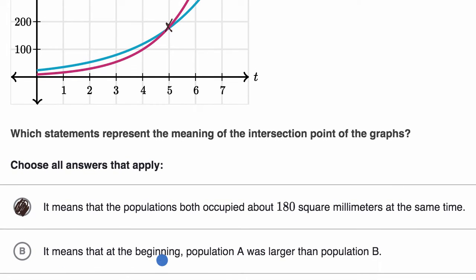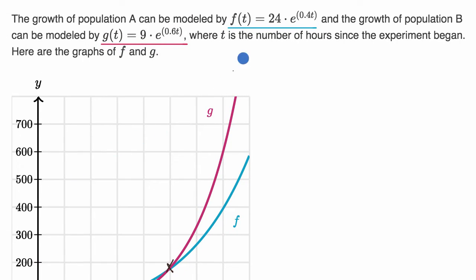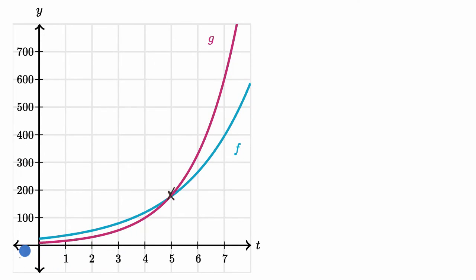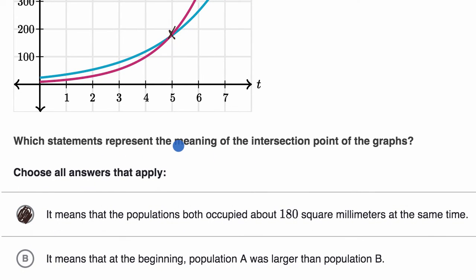Choice B says it means that at the beginning, population A was larger than population B. The point of intersection doesn't tell us what population was larger to begin with. We could try to answer it by looking at T = 0, where population A does look larger than population B — but that's not what the point of intersection tells us. They're not just asking for true statements; they're asking which statements represent the meaning of the intersection point.